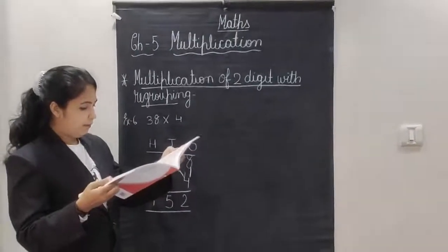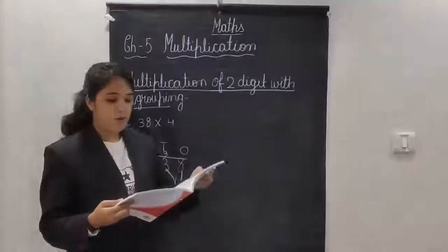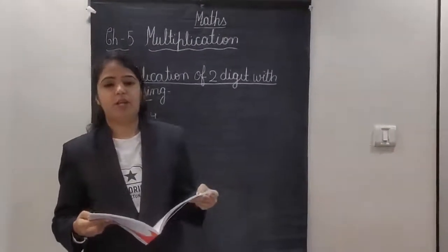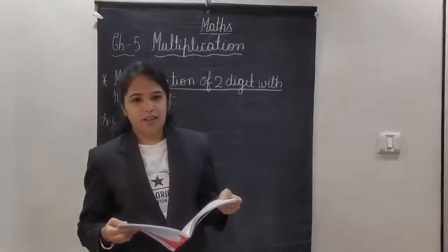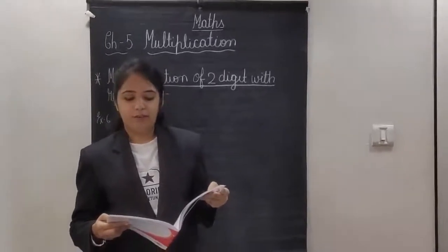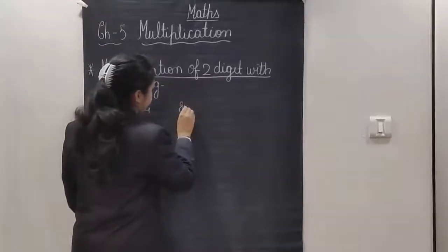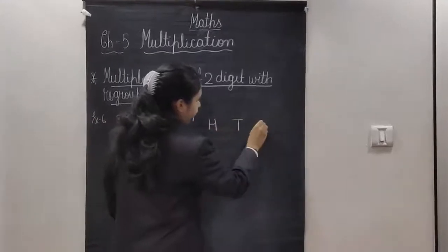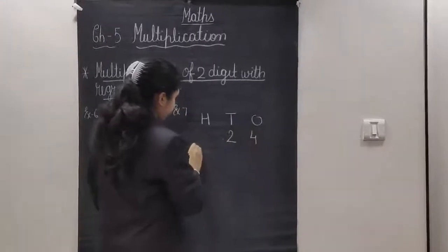So after example number 6, let's move to 7. Find the product of 24 and 6, which is we have to multiply 24 by 6. Now what is the product? Product is nothing but the answer of multiplication. Now example 7, again I am writing hundreds, tens and ones, 24 multiplied by 6.